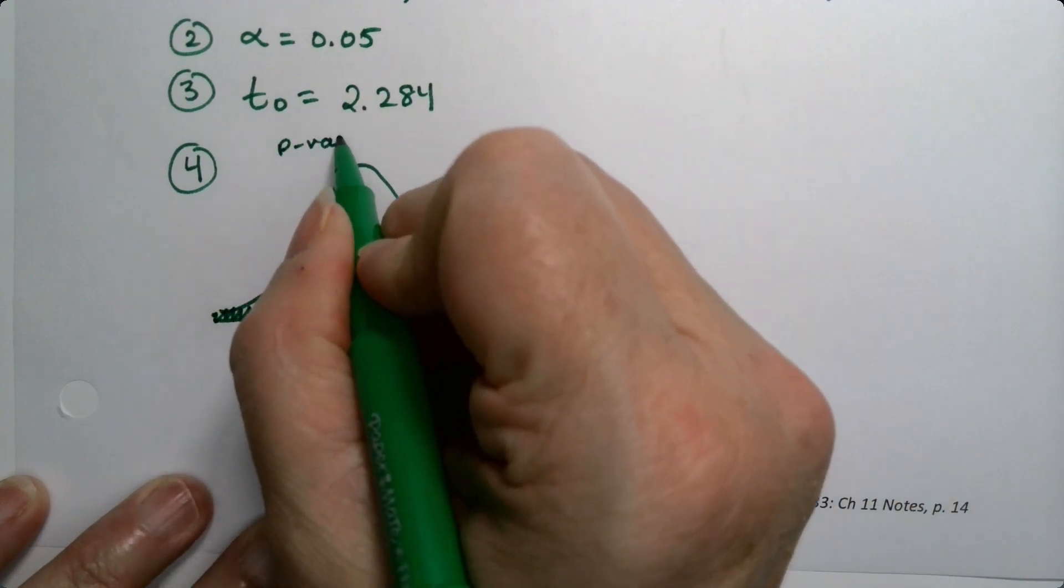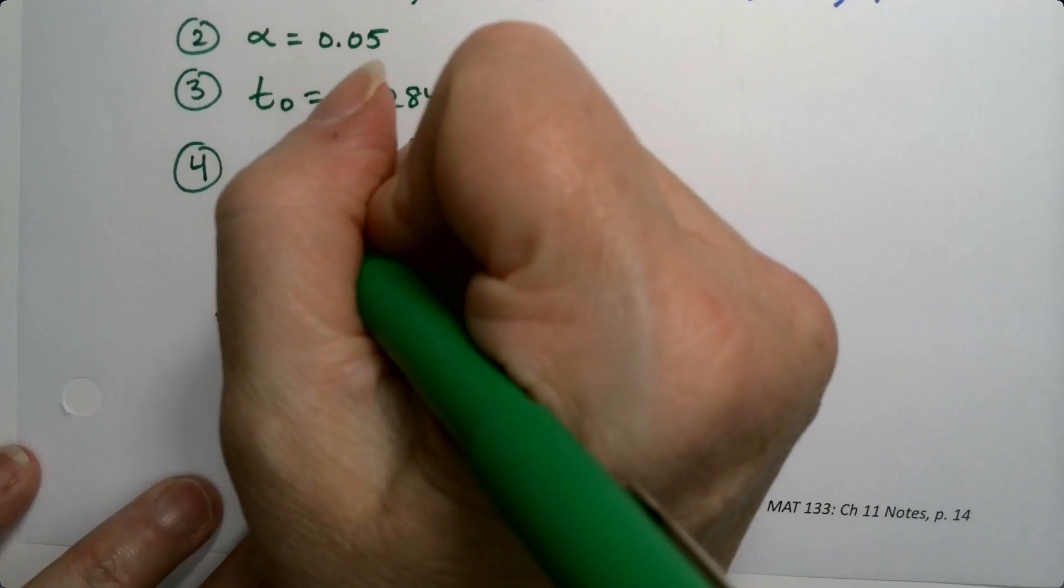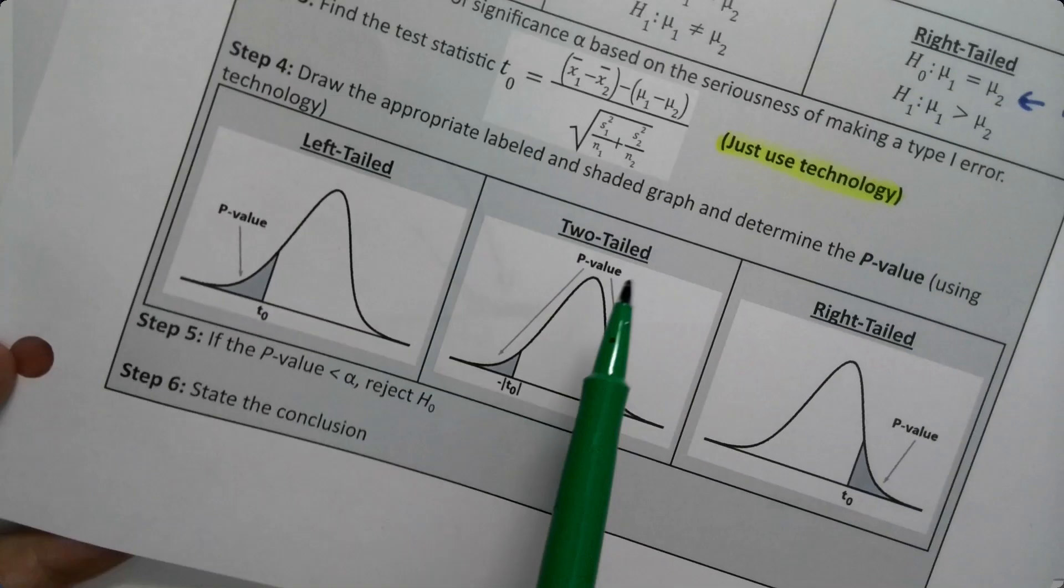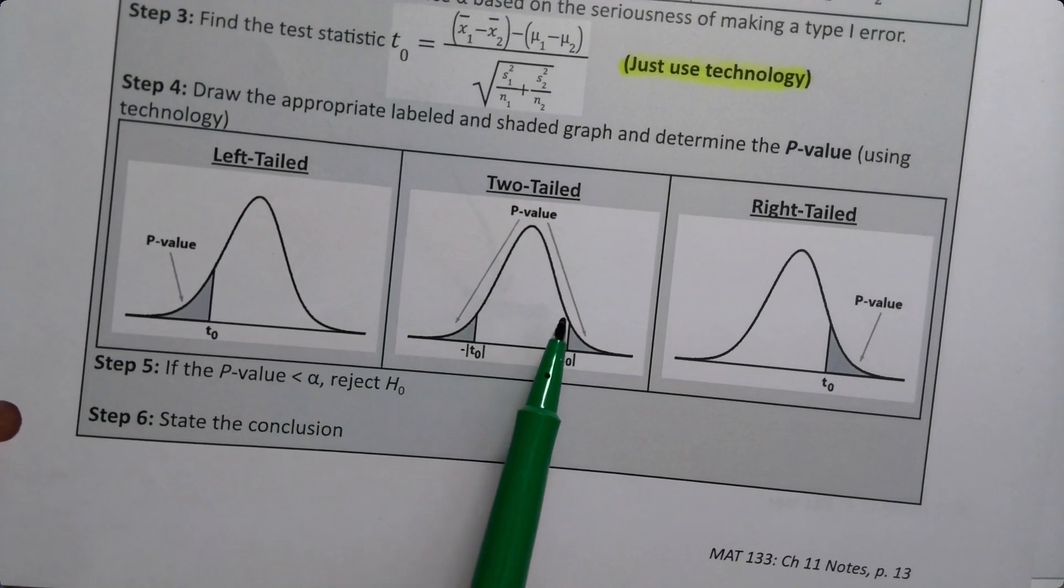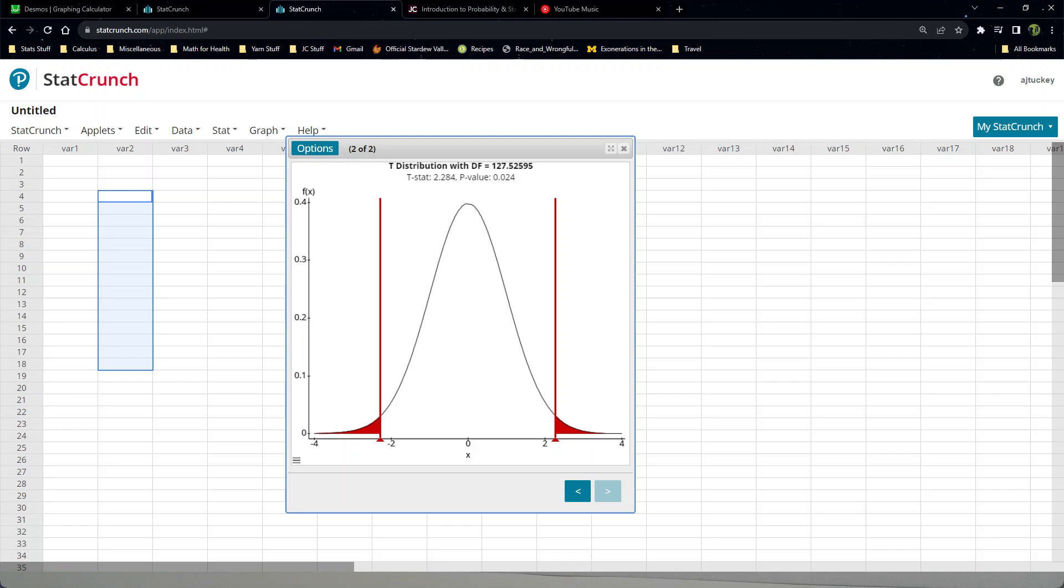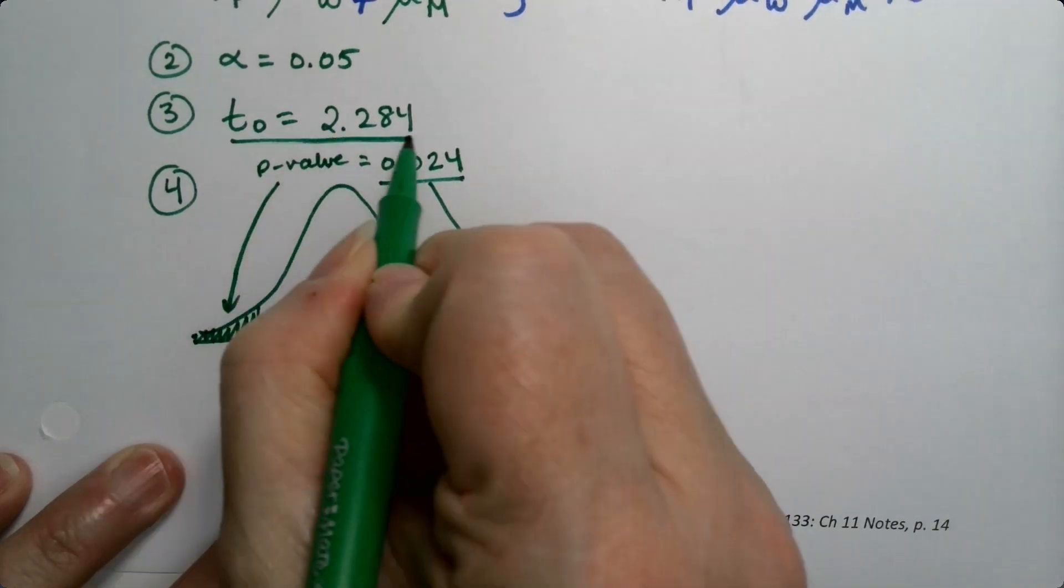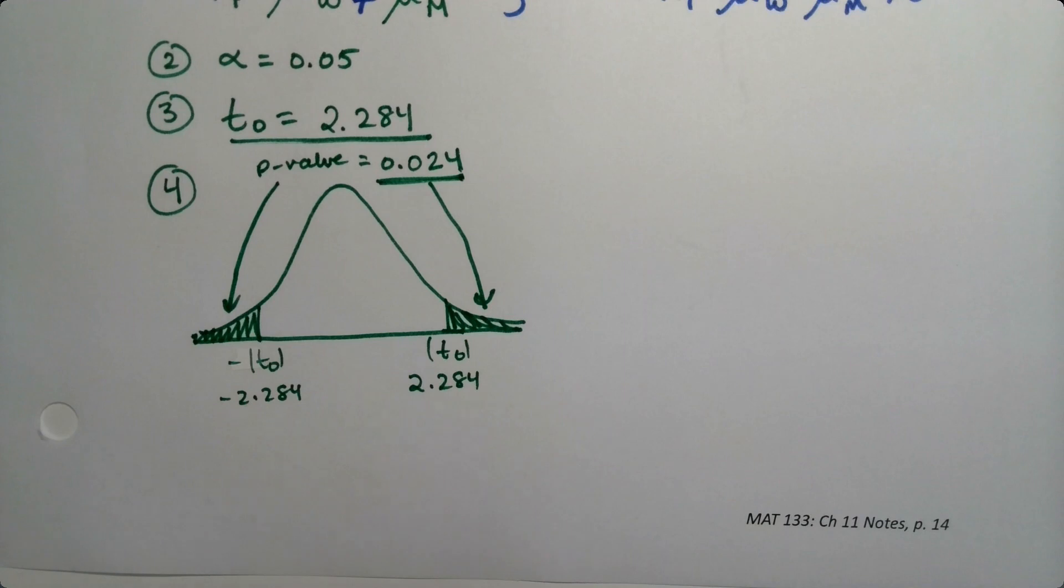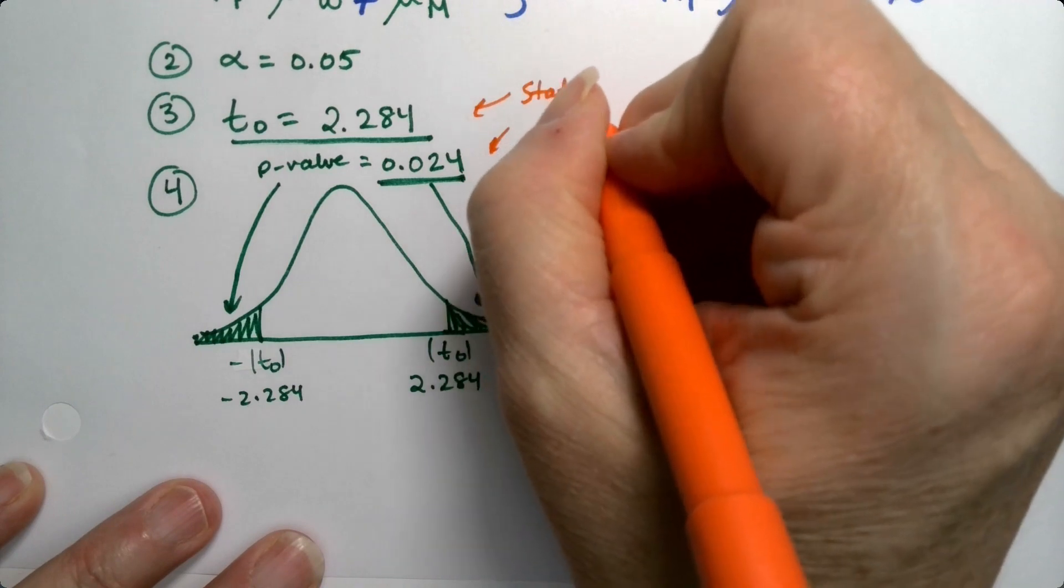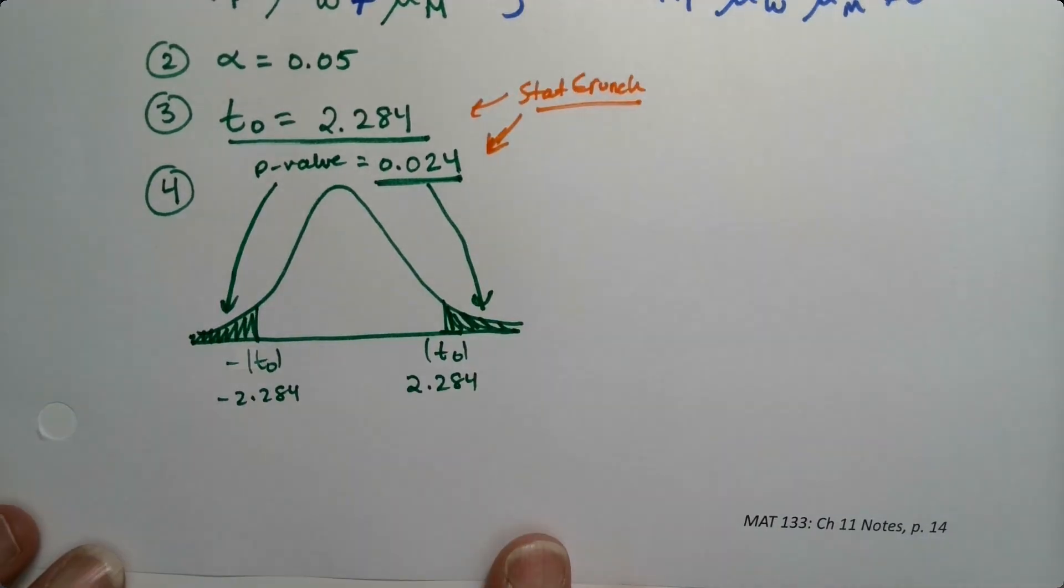Then we say the p-value. The way two-tailed tests work is you have to write the p-value up at the top and do a double pointed arrow to both sides, just like I do in the packet here. Let me grab that p-value: 0.024. Done. There's step three, there's step four. We get those from StatCrunch.